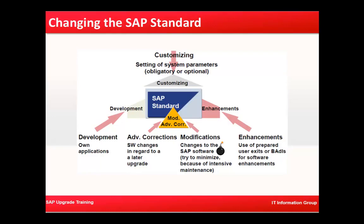The next thing is enhancements — that is use of prepared user exits or BADIs for system enhancements. So here we are seeing four different types of activities: first are Z programs, basically programs developed to enhance the SAP software; second is advanced corrections; third is modifications to SAP-supplied standard objects; and lastly, enhancements using BADIs for software enhancements.